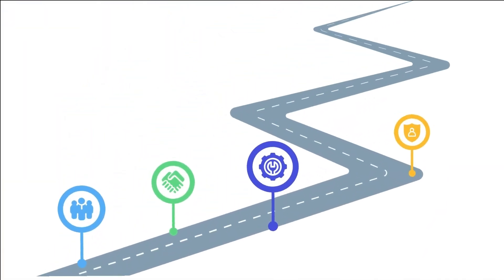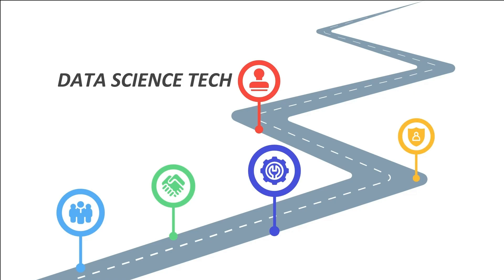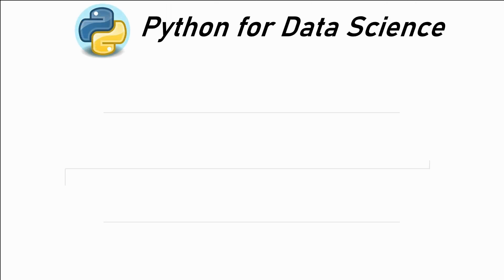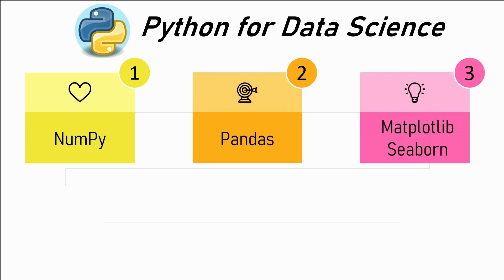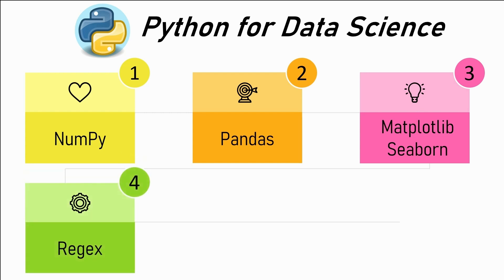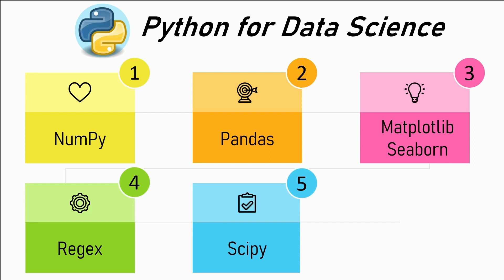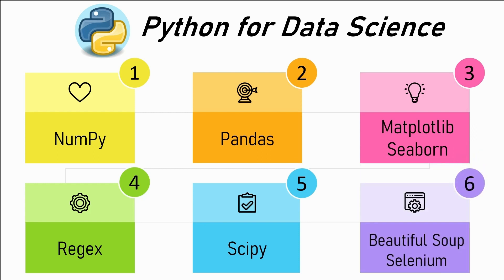Now continuing with machine learning prep using Python: learn some data science-specific Python libraries. They are NumPy for aggregation, pandas for data import, export, and cleaning, and matplotlib or seaborn for visualization. Then learn regular expressions — the regex library — used majorly for data cleaning. Then learn scipy for high-level mathematics, and finally beautiful soup or selenium for web scraping, that is pulling data from websites. Learn these libraries in the order specified, as this is the order of importance.